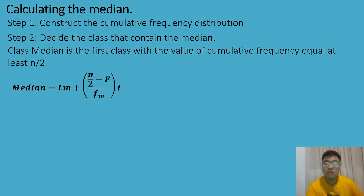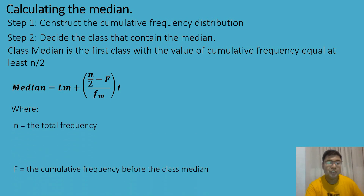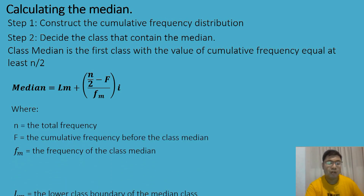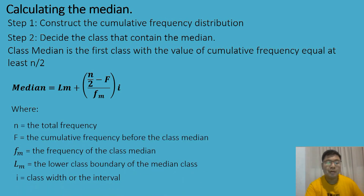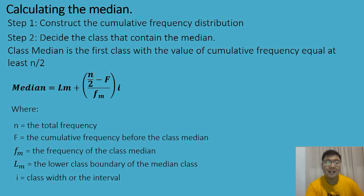To solve for the median, we use the formula: median is equal to the lower class boundary of the median class, plus n over 2 minus the cumulative frequency before the median class, all over the frequency of the median class, times the class width or interval. That is our working formula.